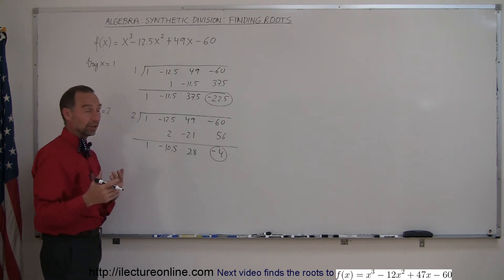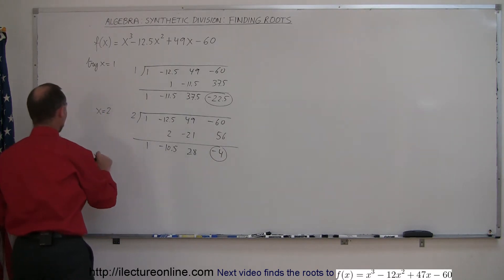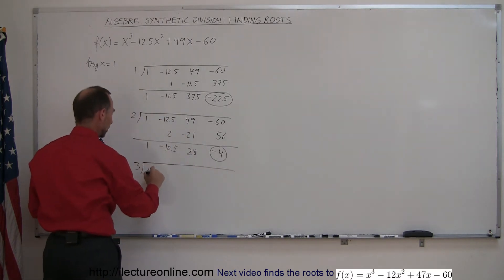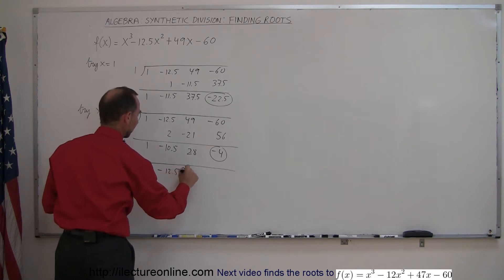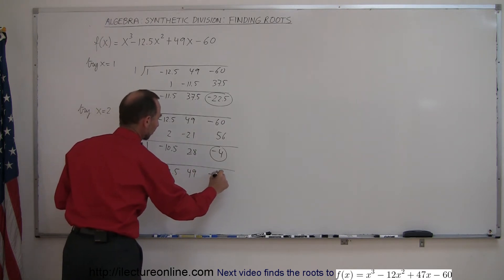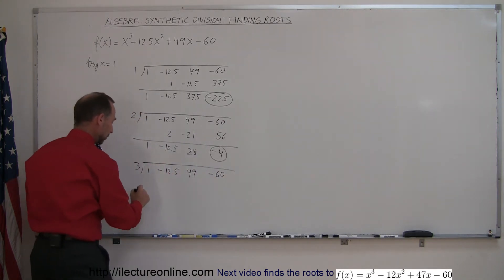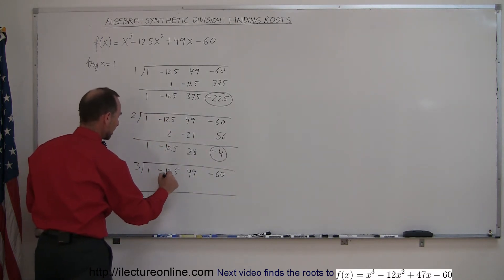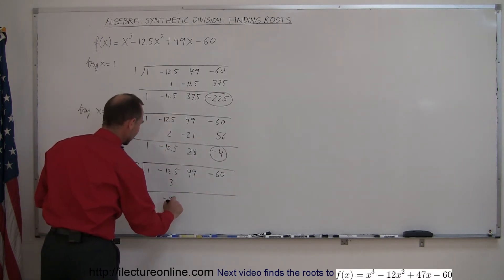Let's now try x equals 3. We're going to try these numbers, that doesn't mean those are the roots, we're just going to see if they are. We put down our coefficients: 1, minus 12.5, 49, and minus 60. Drop the first number, 1 times 3 is 3, add them together you get minus 9.5.